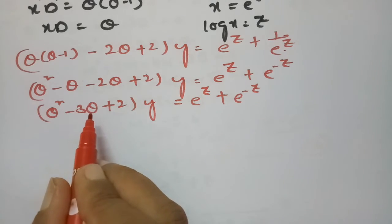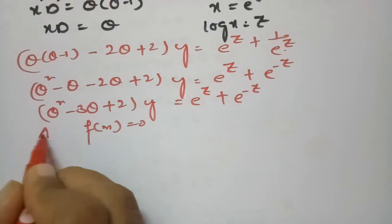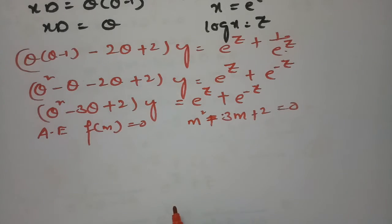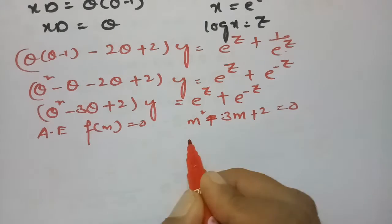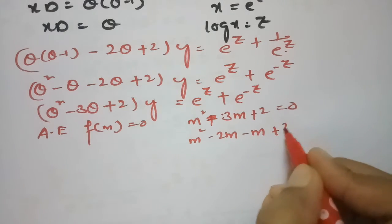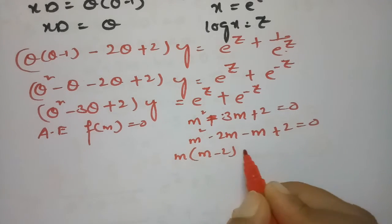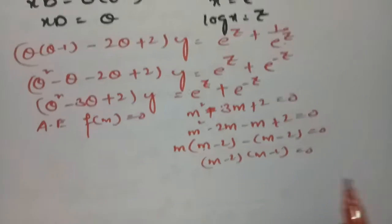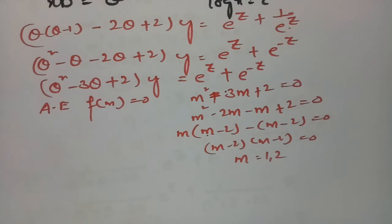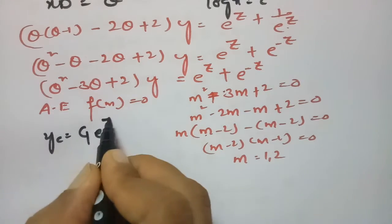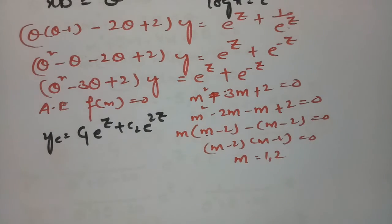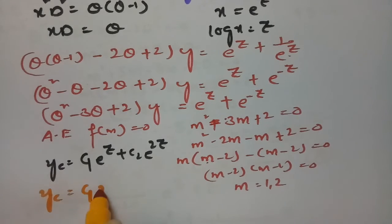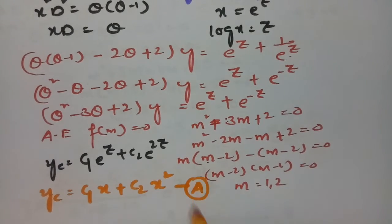Auxiliary equation f(m) = 0: m² − 3m + 2 = 0, which factors as m² − 2m − m + 2 = 0, giving m(m−2) − 1(m−2) = 0, so (m−2)(m−1) = 0. Roots are m = 1 and m = 2. Therefore yc = c1·e^z + c2·e^(2z). Since e^z = x: yc = c1·x + c2·x².